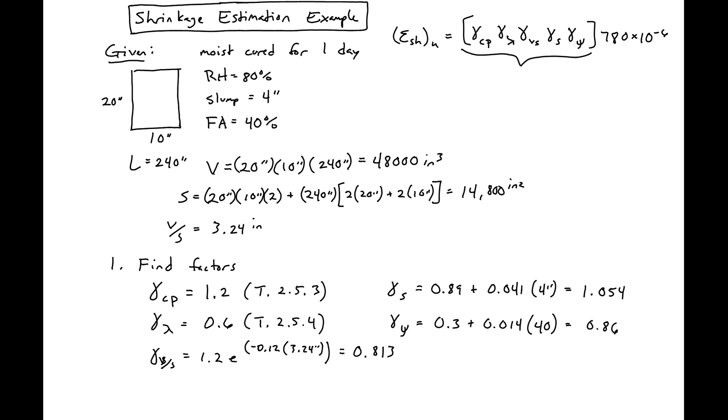We can call this shorthand our shrinkage factor, which is 0.531. Our ultimate strain is then 414 microstrain. This is our final answer.